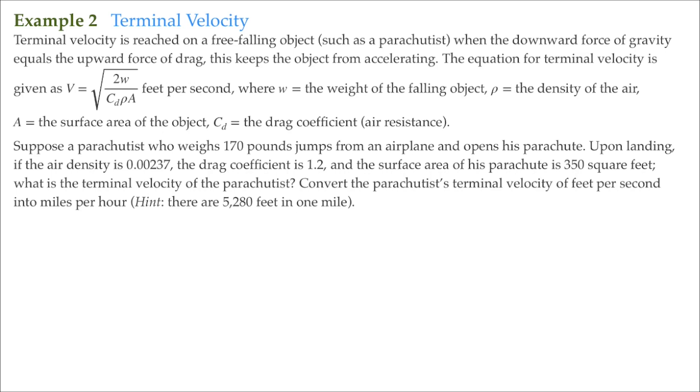Terminal velocity is reached on a free-falling object, such as a parachutist, when the downward force of gravity equals the upward force of drag. This keeps the object from accelerating.